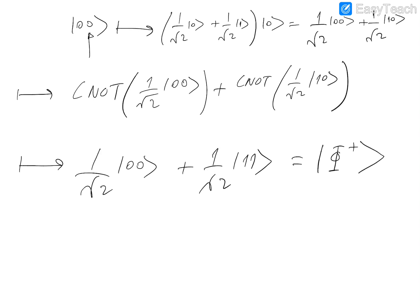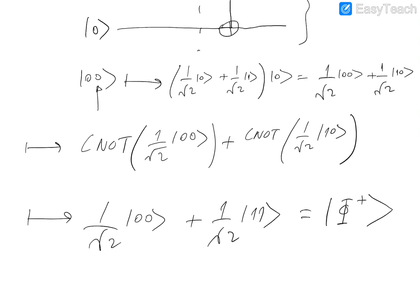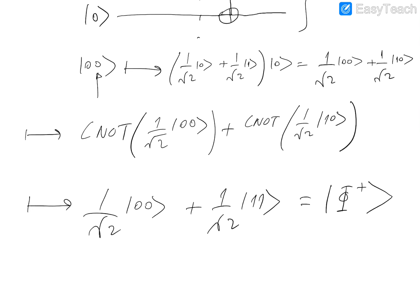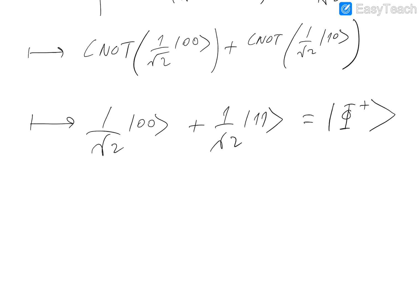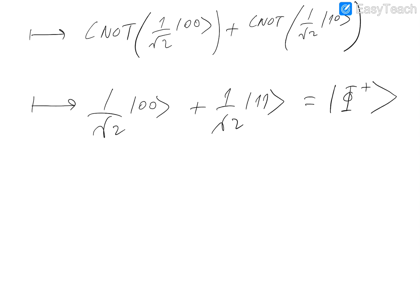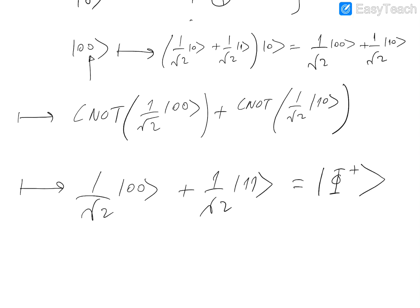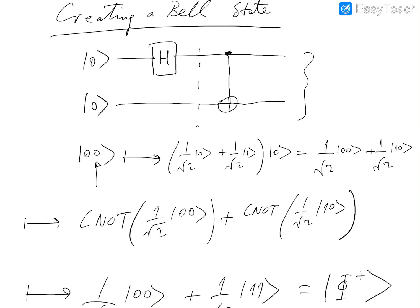There are actually four Bell states. We get different Bell states with different inputs — we get all the orthonormal set of Bell states when given inputs 00, 01, 10, and 11. As an exercise, I encourage you to work through that.